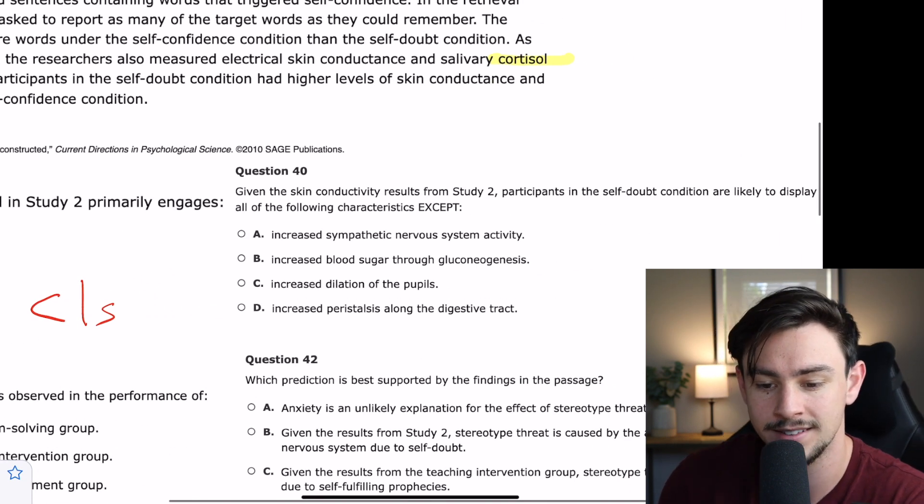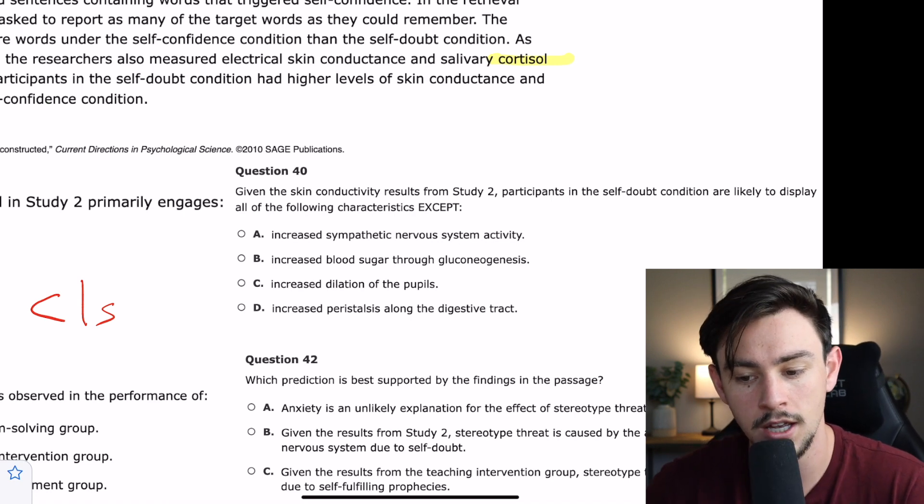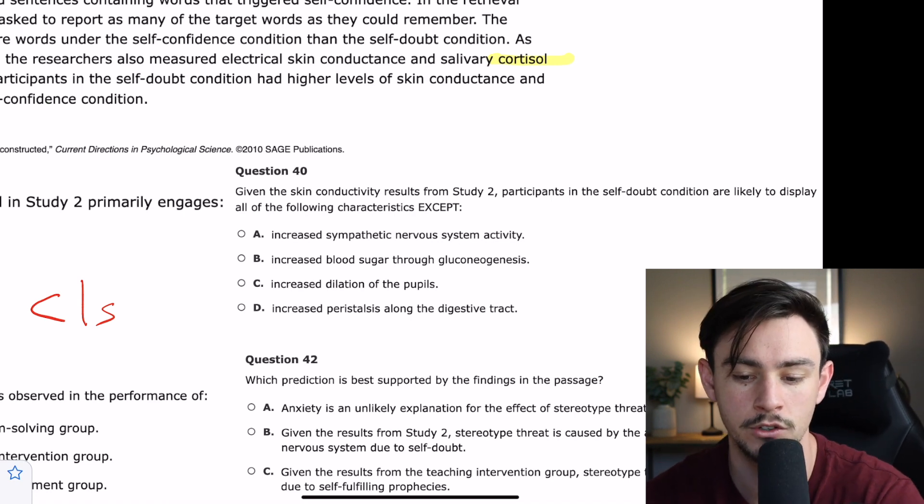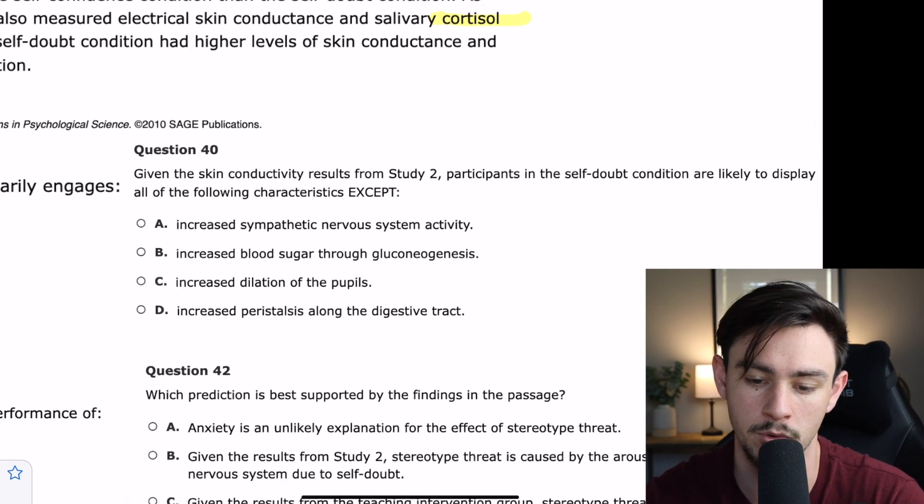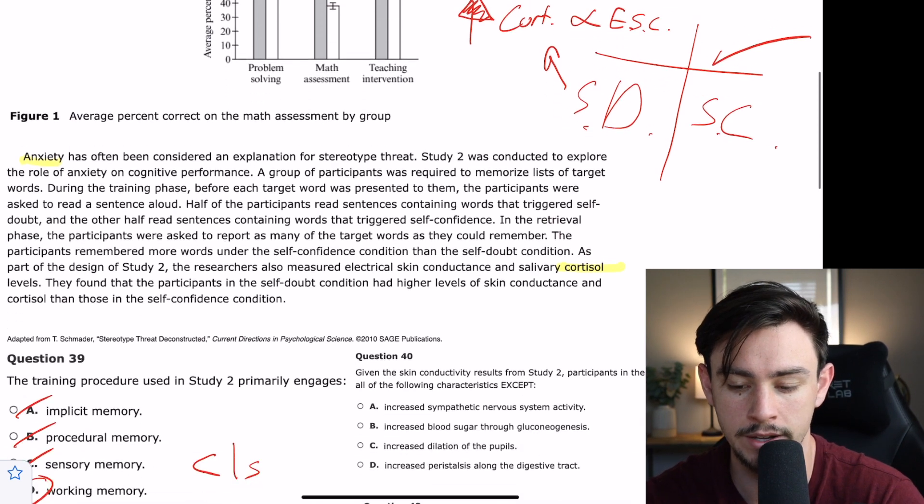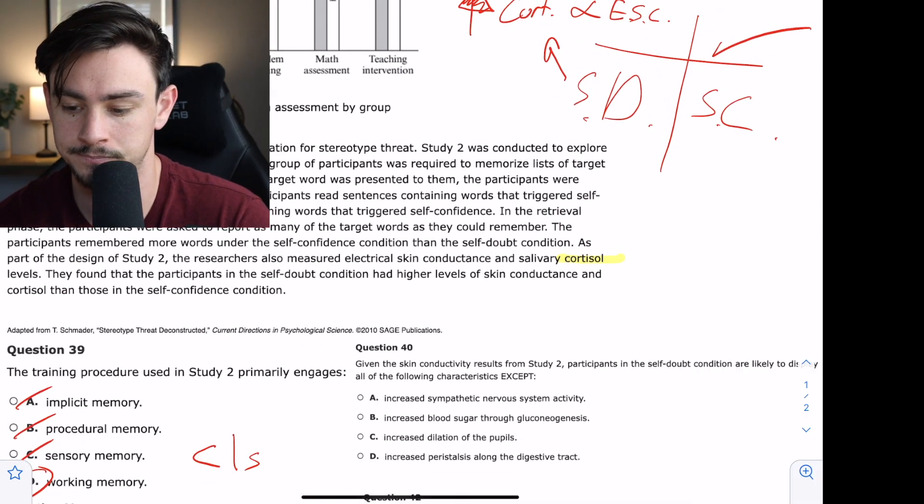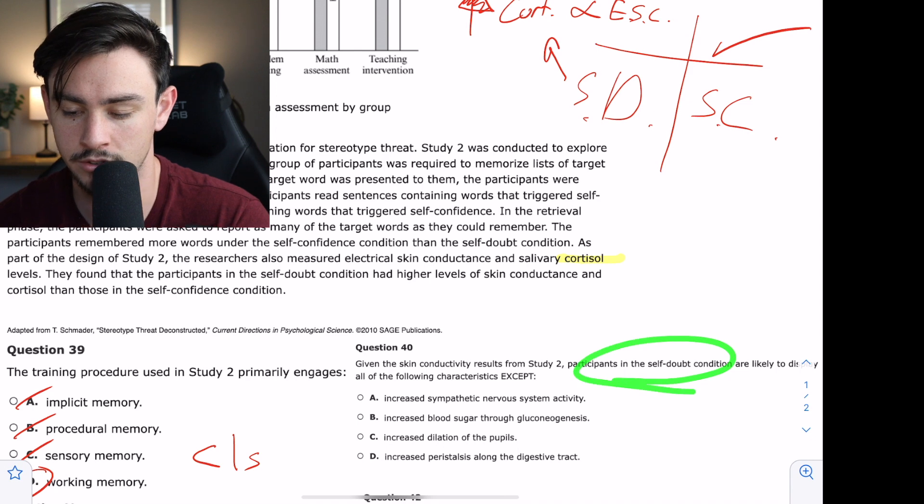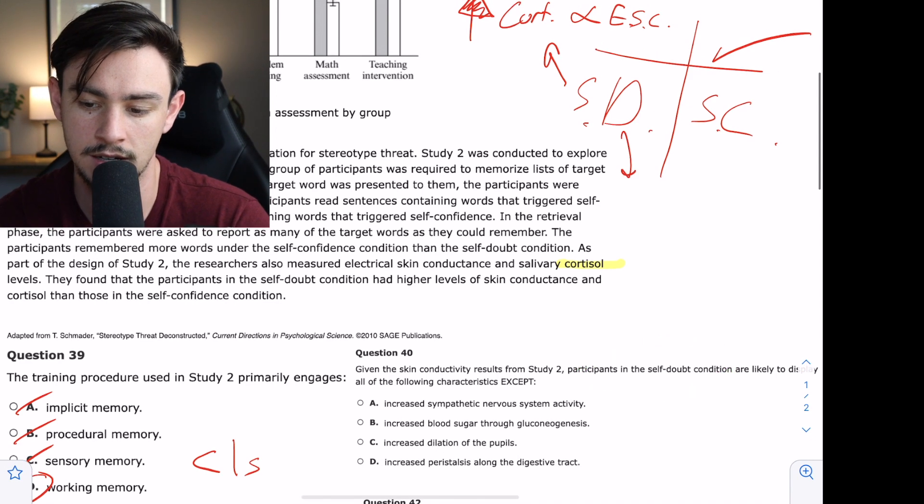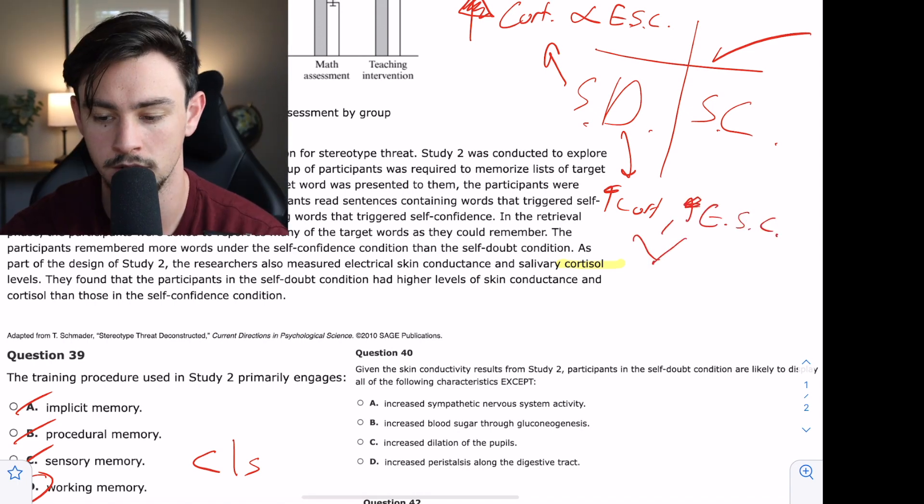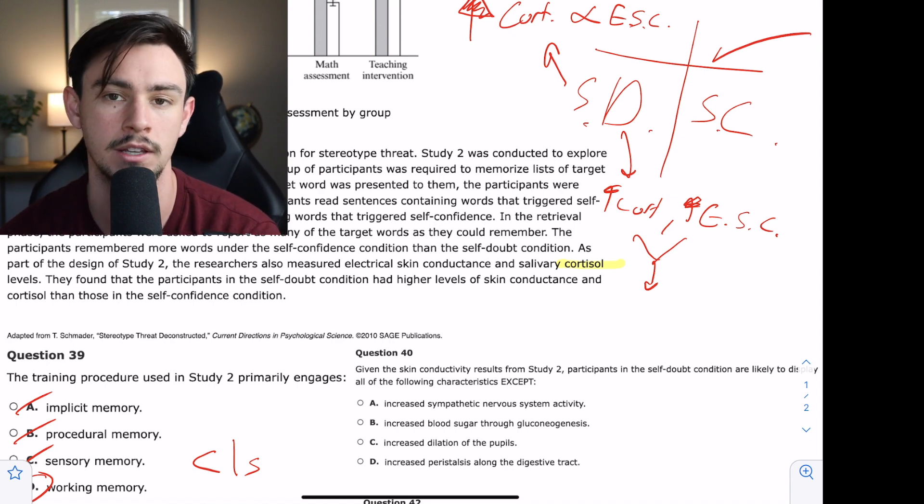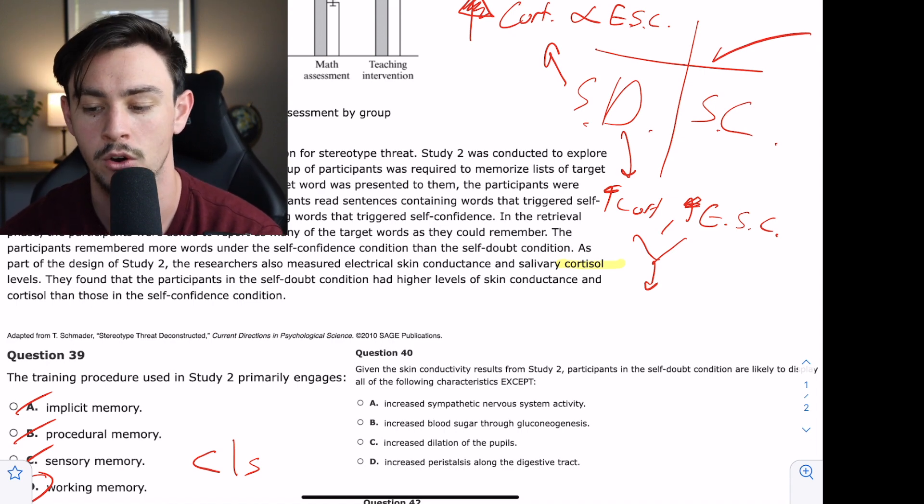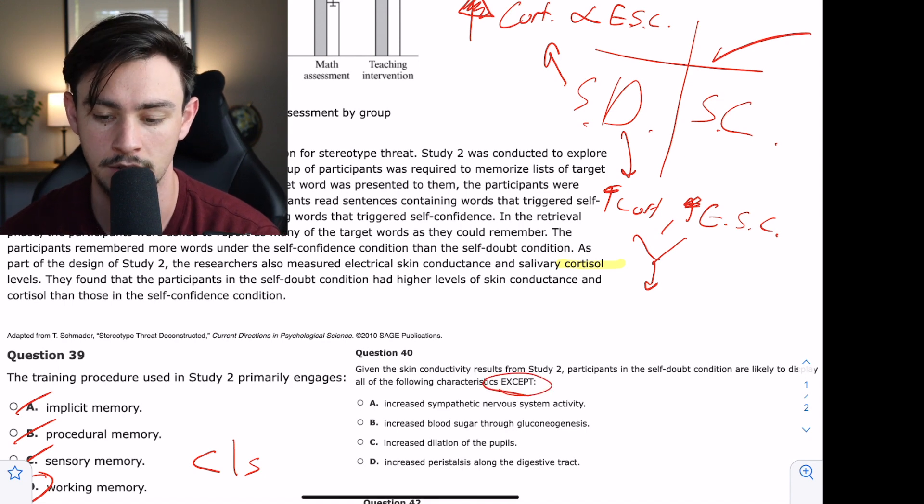So, if you're looking for short-term memory and you rule out the other three and all you find is working memory, that's the answer you're going with. So, the correct answer to the number 39 is D because memorizing a list of words and having to spit them up in a minute or so, that is a form and fashion of short-term or working memory. Number 40 says, given the skin connectivity results from study two, participants in the self-doubt condition are likely to display all the following characteristics except for what? Okay. So, remember, we just made this web that I erased for some reason about those in the self-doubt condition. So, if you're in the self-doubt condition, then you've got a lot of cortisol. You know, you're very electric. And what the question is going to say, what can cortisol, high electrical skin conductivity, and things like that explain? Or rather, which of these is not explained by those?